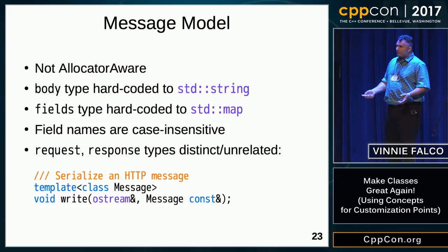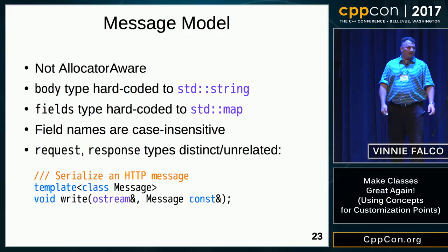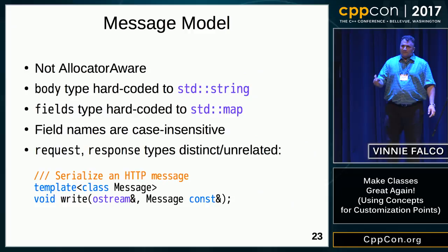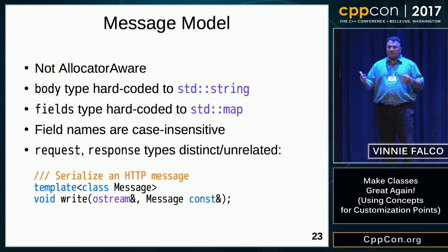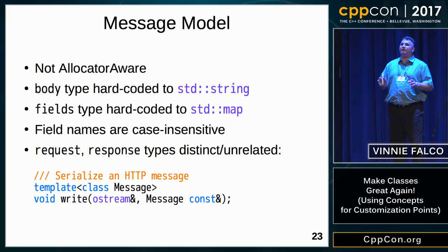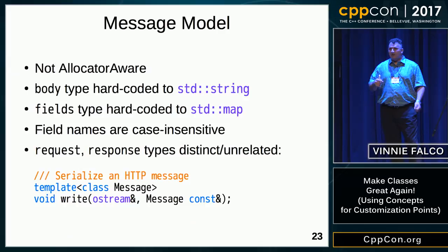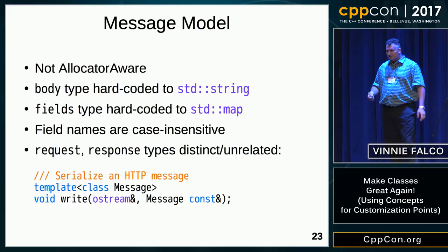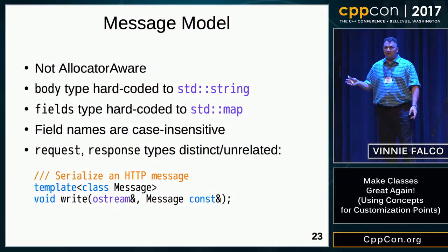If we want a single function capable of serializing a message, we have to make the message parameter a template type. But that signature would also accept things that are not requests or responses — like a Foo or an int — resulting in confusing compiler errors. We need to refactor. I've created a message class template parameterized on a bool: true for request, false for response. Now we specialize for each, and create type aliases so users don't have to write true/false naked in the code.